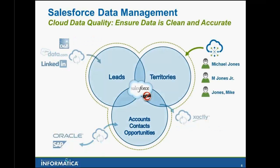The next step that this customer walked us through was in the area of cloud data quality, and this led into a broader conversation about cloud master data management. The first challenge people struggle with is being able to manage the duplicate data problem and making sure that you have a customer master — whether you see in this example it's Michael Jones, M. Jones Jr., or Mike Jones. Additionally, they talked about how they need to have multiple hierarchies and the ability to get a view across these hierarchies for reporting and analysis purposes.